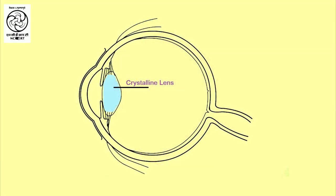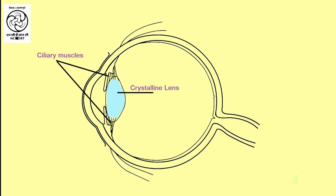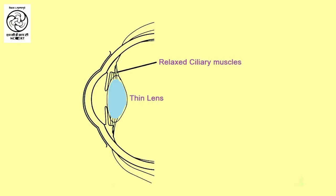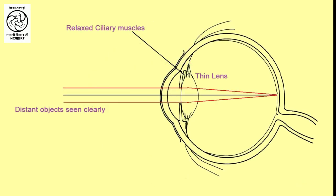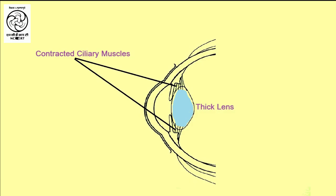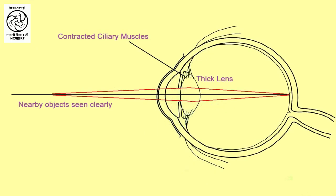The eye lens is composed of a fibrous, jelly-like material. Its curvature can be modified to some extent by the ciliary muscles. Thus, the change in curvature of the eye lens can change its focal length. When the muscles are relaxed, the lens becomes thin, its focal length increases, and this enables us to see distant objects clearly. When looking at objects closer to the eye, the ciliary muscles contract, increasing the curvature of the eye lens, making it thicker. Consequently, the focal length decreases, enabling us to see nearby objects clearly.